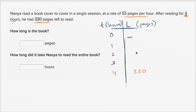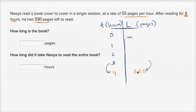Based on this, and the fact that he's reading at 55 pages per hour, can we back up to figure out the earlier values? Every hour that goes by, he has read 55 pages. Remember, 330 is not how many pages he's read — it's how many he has left to read. So after every hour, he has 55 fewer pages to read. At three hours, he should have 55 more pages: 330 plus 55 is 385.